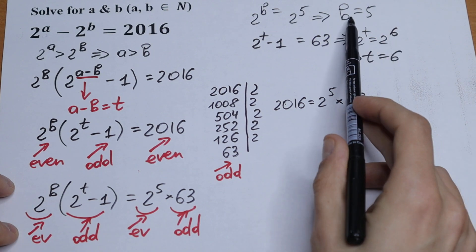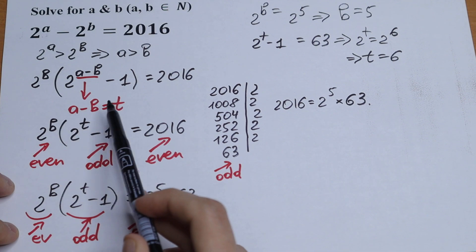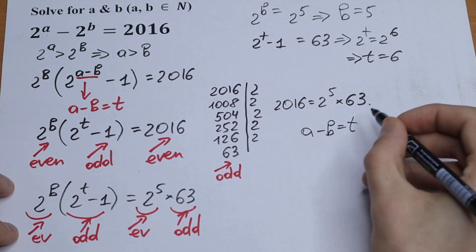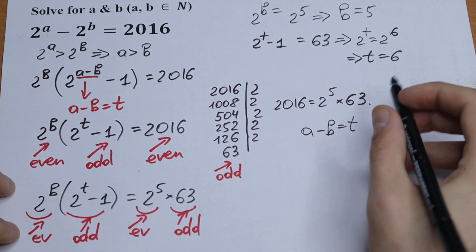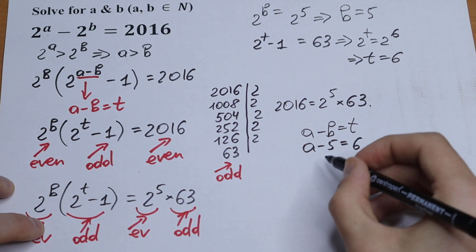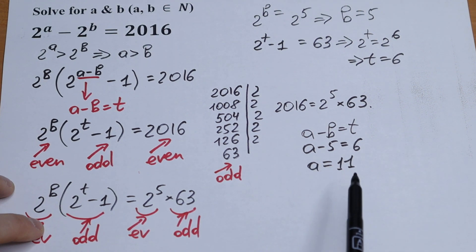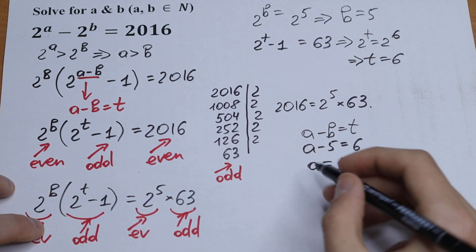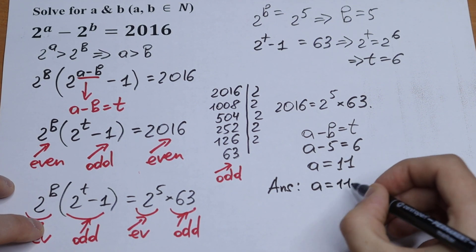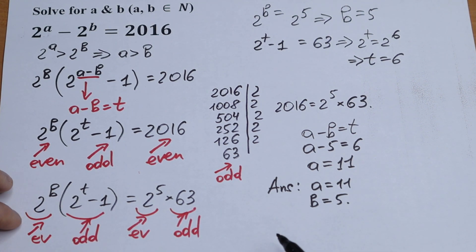So we have b equals 5 and t equals 6. Now we substitute back, since a minus b equals t. We get a minus 5 equals 6, so a equals 11. Our answer is a equals 11 and b equals 5.